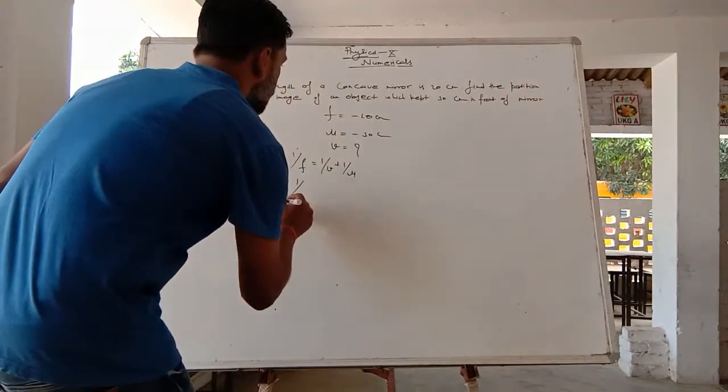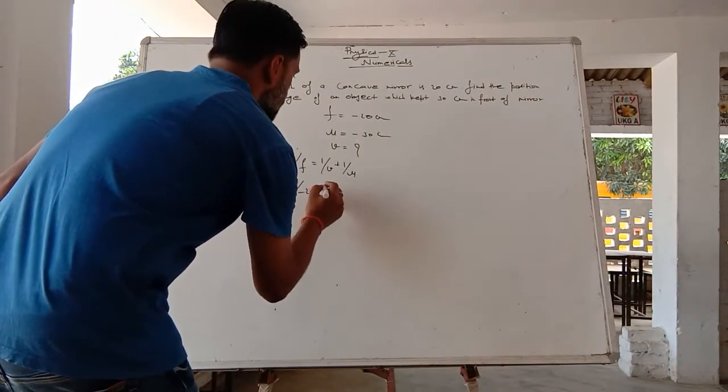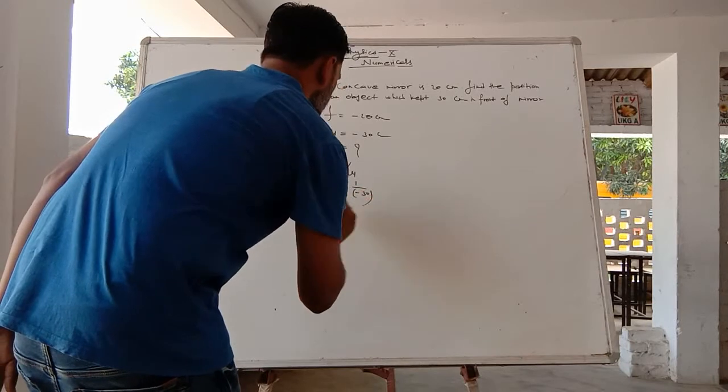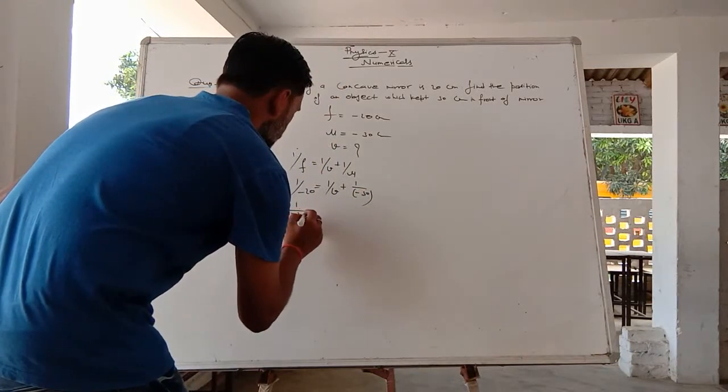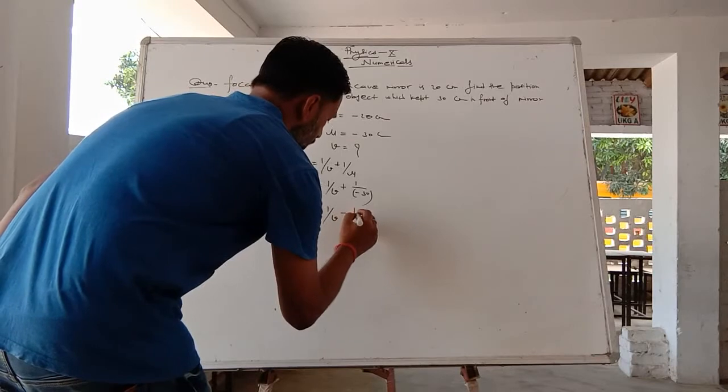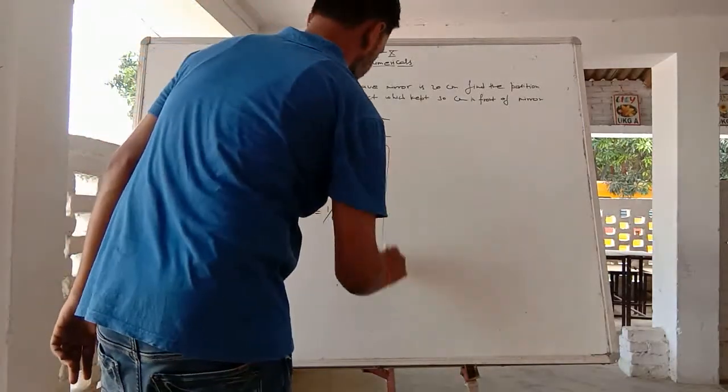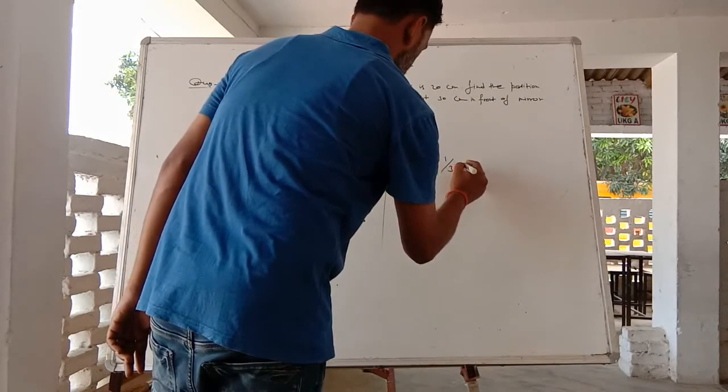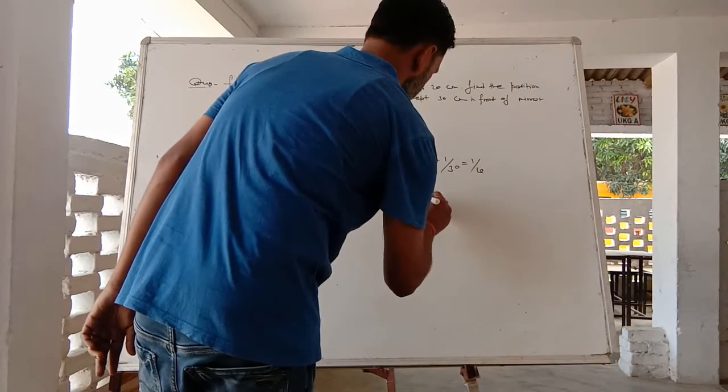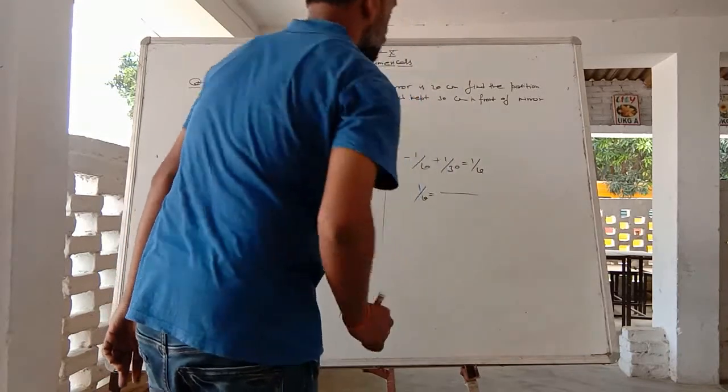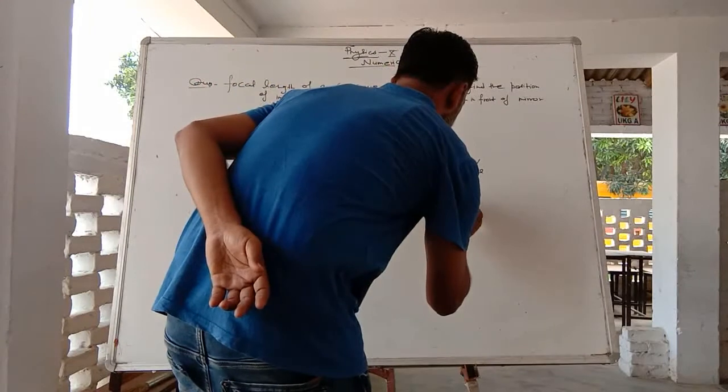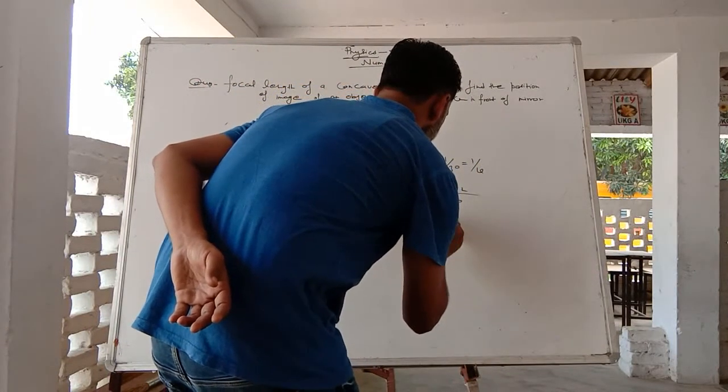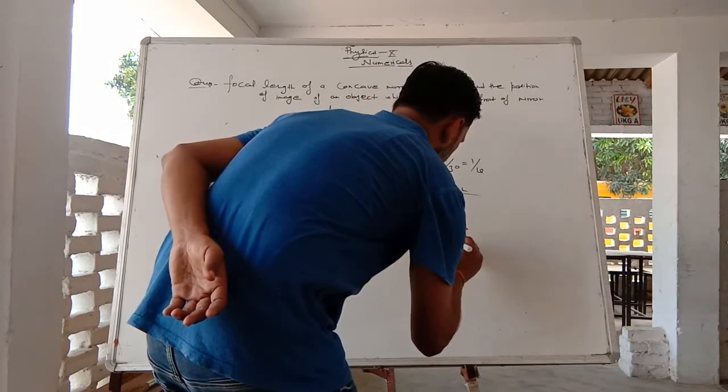So 1 upon f value, 1 upon minus 20 is equal to 1 upon v plus 1 upon minus 30. Transferring to get the value of v: minus 1 upon 20 plus 1 upon 30 is equal to 1 upon v. Taking LCM, we can find the value.